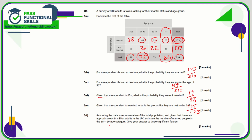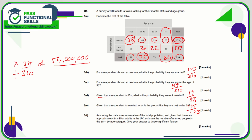For part f, we know there are 54 million adults in the UK. We want an estimate for the number of married people in the 18 to 29 age category. Married 18-to-29 is 38 out of 310. So we calculate 38/310 of 54 million: take 54,000,000, divide by 310, then multiply by 38. That gives 6,619,354.839...